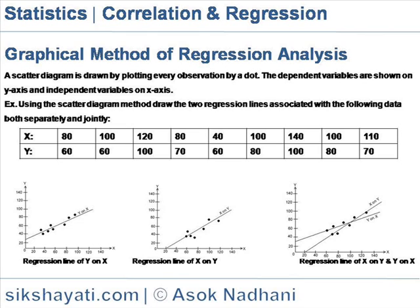The line of best fit in the scatter diagram is used to summarize the data. Example: using the scatter diagram method, draw the two regression lines associated with the following data, both separately and jointly.